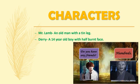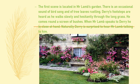One is Mr. Lamb, who is an old man with a tin leg. This old man is very lonely and lives in a big house with a garden. Another character is Derry, who is a 14-year-old boy. The play starts with the first scene which is set in Mr. Lamb's garden. Mr. Lamb lives alone in a very big house, whose garden gate always remains open.